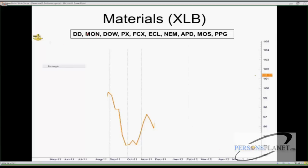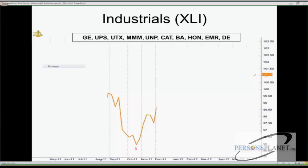Maybe the materials sector is going to save us — some materials in the ag space like Mosaic, Dow Chemicals, or Monsanto, which produces fertilizer. After harvest, farmers till the fields and prepare for the next planting season. Maybe DuPont and some of these other names can help save the day. But the materials sector in the first week also has a seasonal tendency to go down. And the industrials — the same thing — have a tendency to see a little decline in the middle of November. I'm looking at sectors like John Deere in the industrial-ag space and Caterpillar — these things that can weigh in on the market.